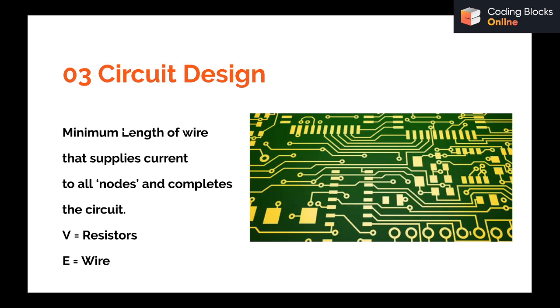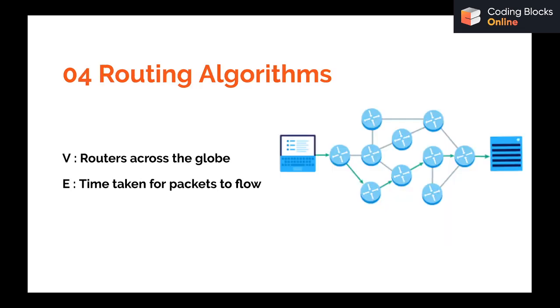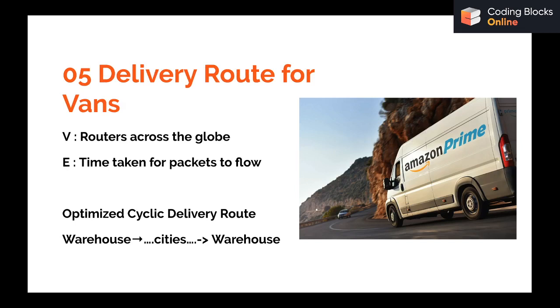You also have routers spread across the world. When you access a website, let's say you're sitting in India and accessing a server from which you are getting data, that data is coming through a network of routers spread across all of the world. If you want to minimize the total time that website will load on your system, you need to optimize the flow of packets through this network of routers. That is again a kind of shortest path problem that graphs around these routers can use.